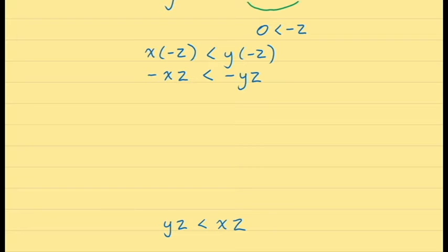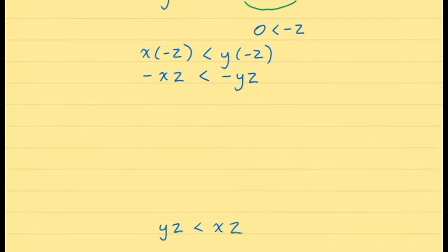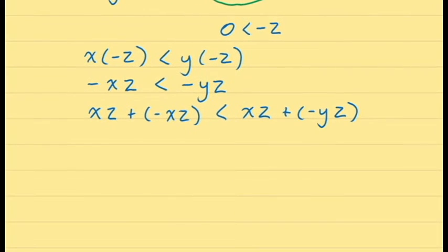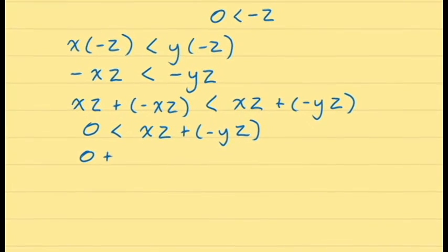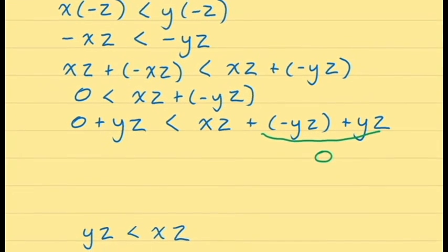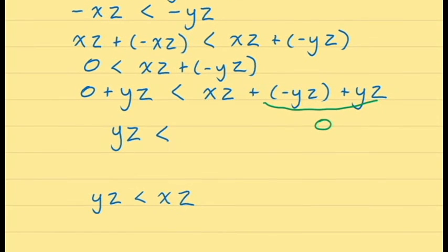This is getting close to the inequality we're trying to derive, but we need to flip things around. To do this, we apply axiom O3 and add xz to both sides, giving xz + (-xz) = 0 on the left, and -yz + xz on the right. Next, we add yz to both sides. This gives yz + 0 on the left and cancels -yz on the right, yielding the inequality we're looking for: yz < xz.